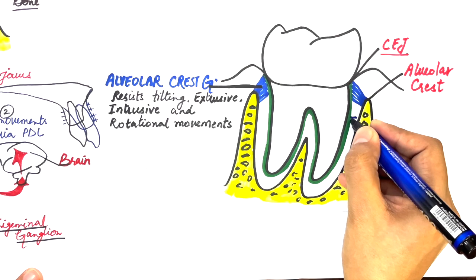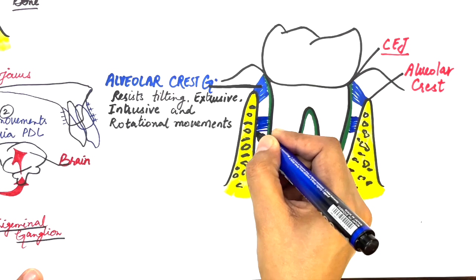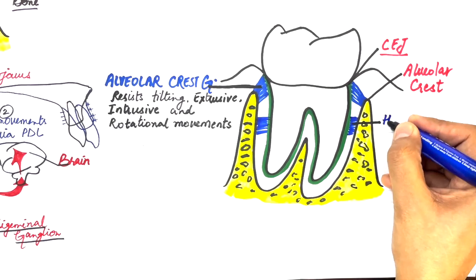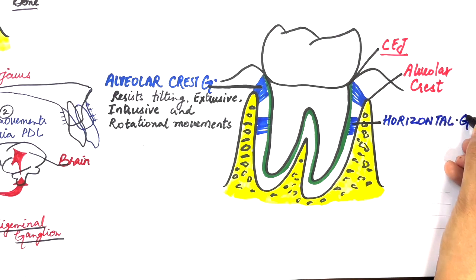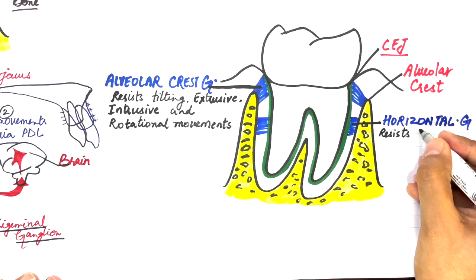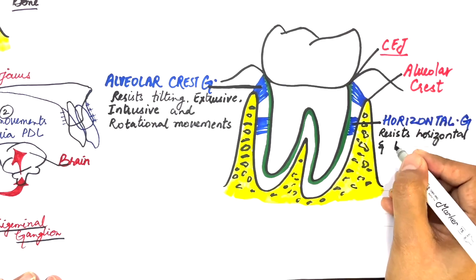The horizontal group is located below the alveolar crest group or at the coronal third of the root. It runs at a right angle to the long axis of the tooth and attaches to the alveolar bone just below the crest. These fibers resist horizontal and tipping forces.